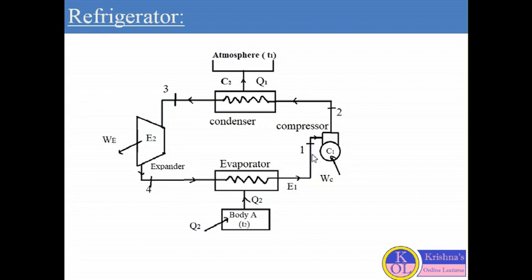Then the vapor goes to the compressor and it is compressed in compressor C1. From the evaporator it goes to the compressor C1, which absorbs work WC. During compression it absorbs work WC. This process is shown by process 1 to 2.